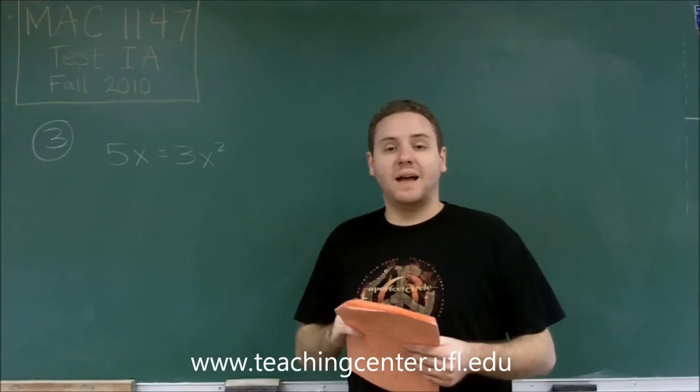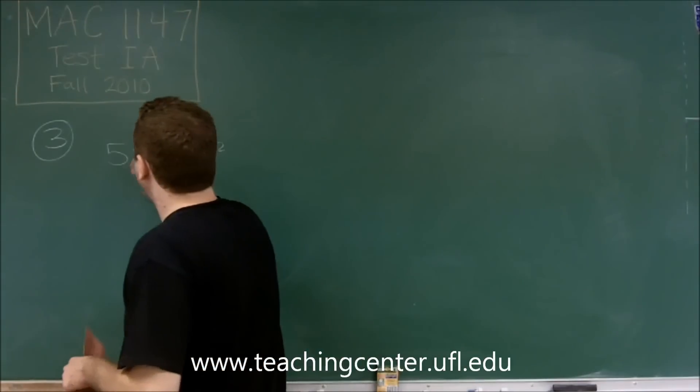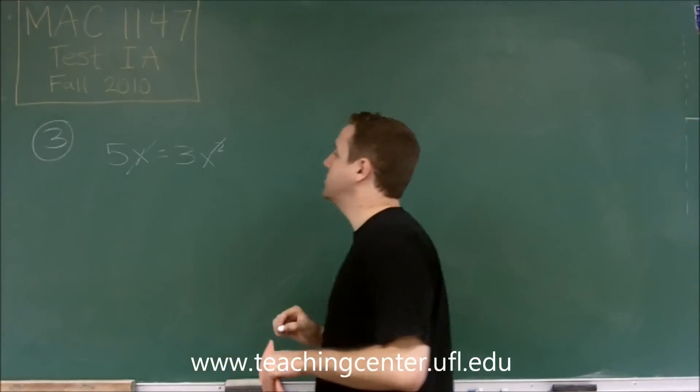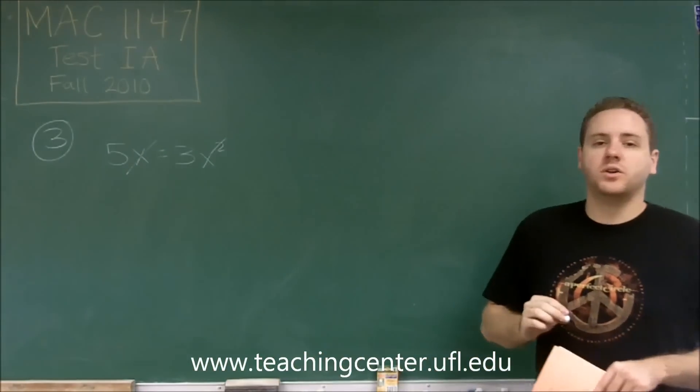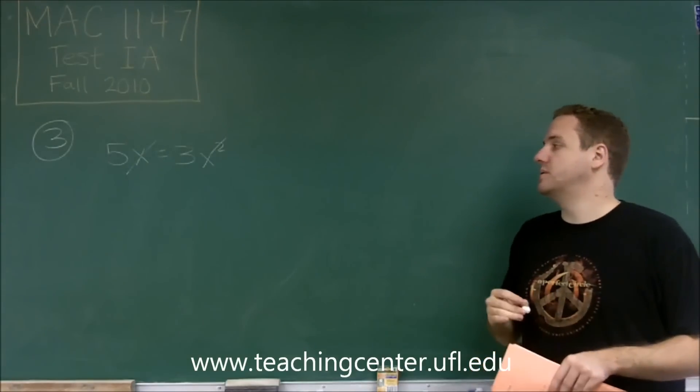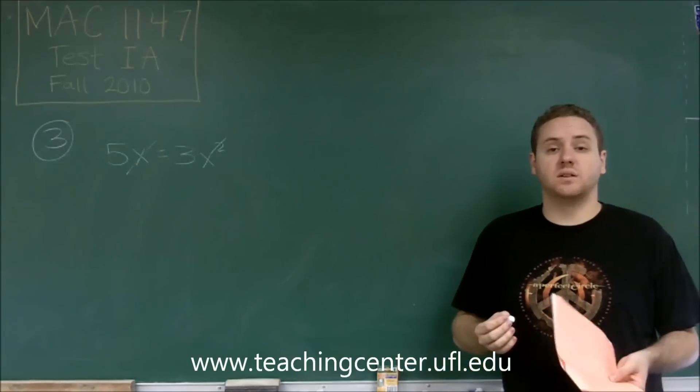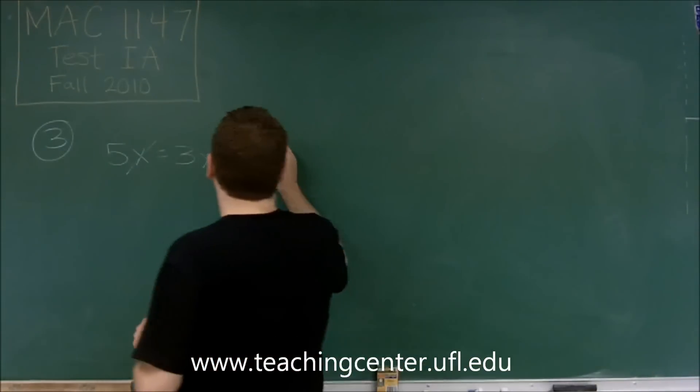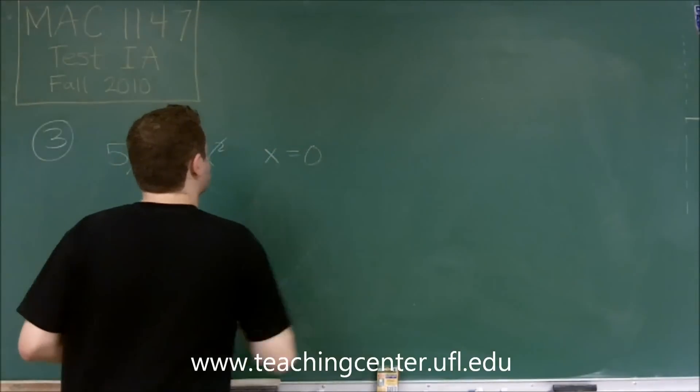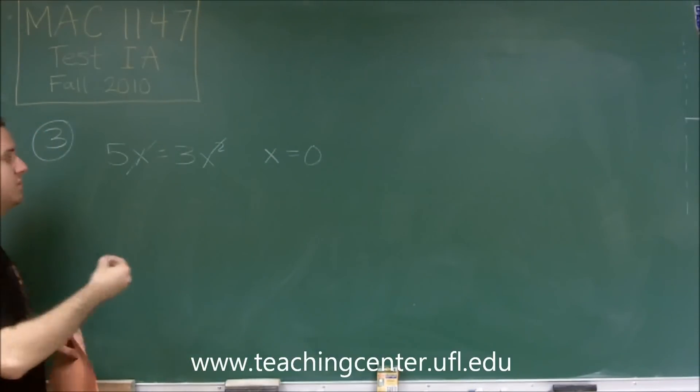Yes, you can divide both sides by x and get rid of that. However, you have to take into account that in doing so, you're saying that 0 could have been a solution, because if you put 0 in for x, both sides are 0. So x equals 0 is definitely a solution, but then you can reduce it further